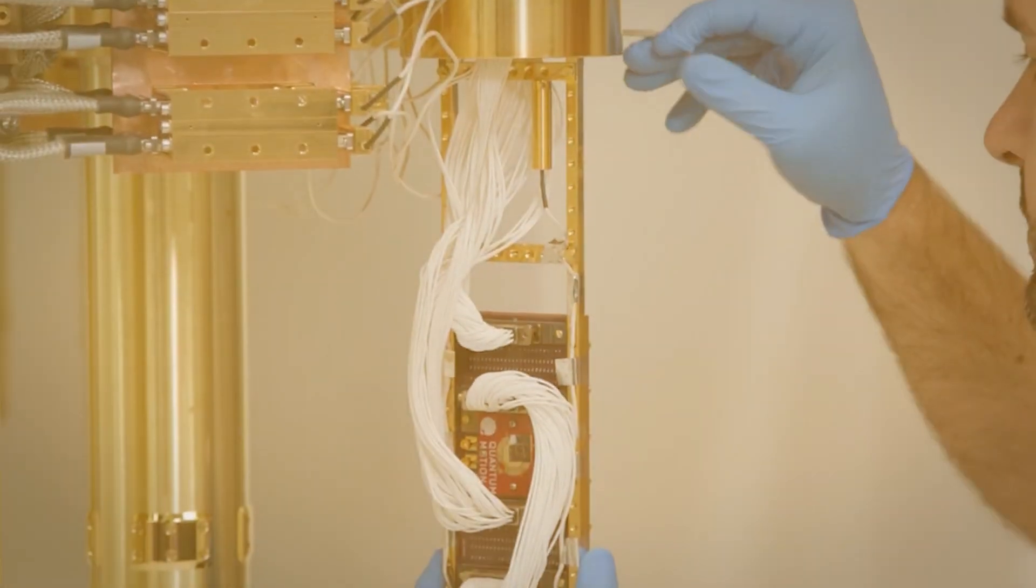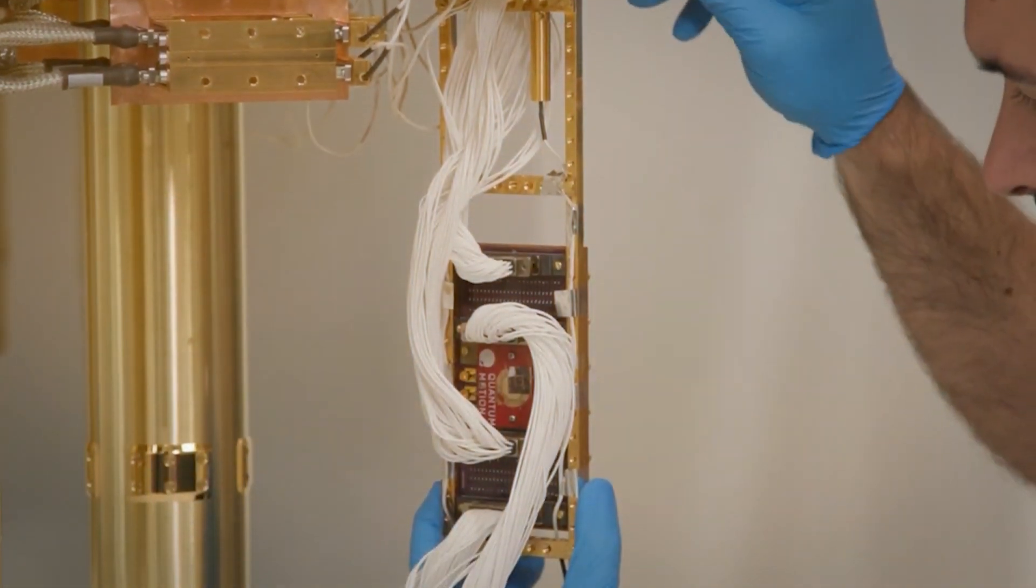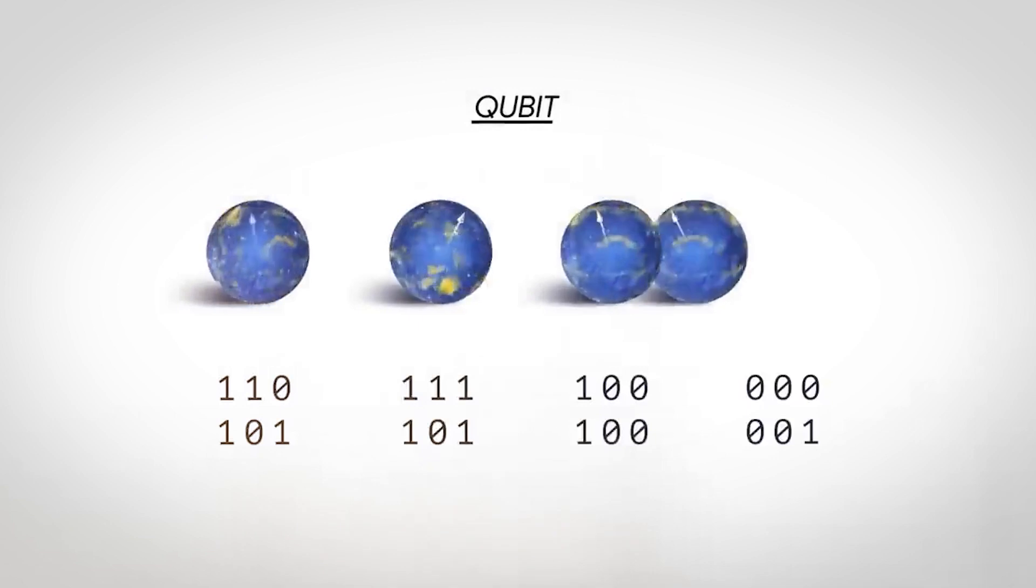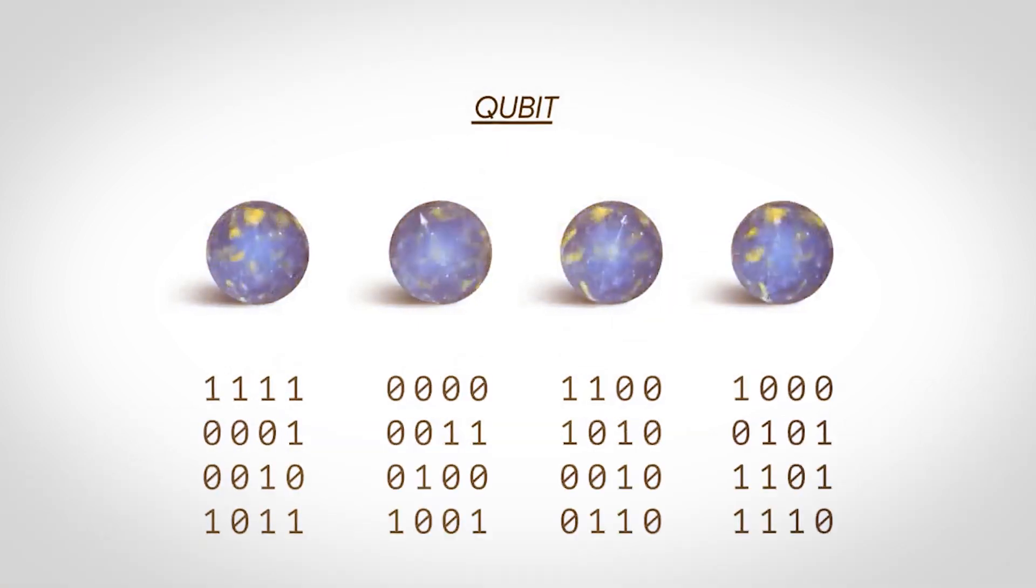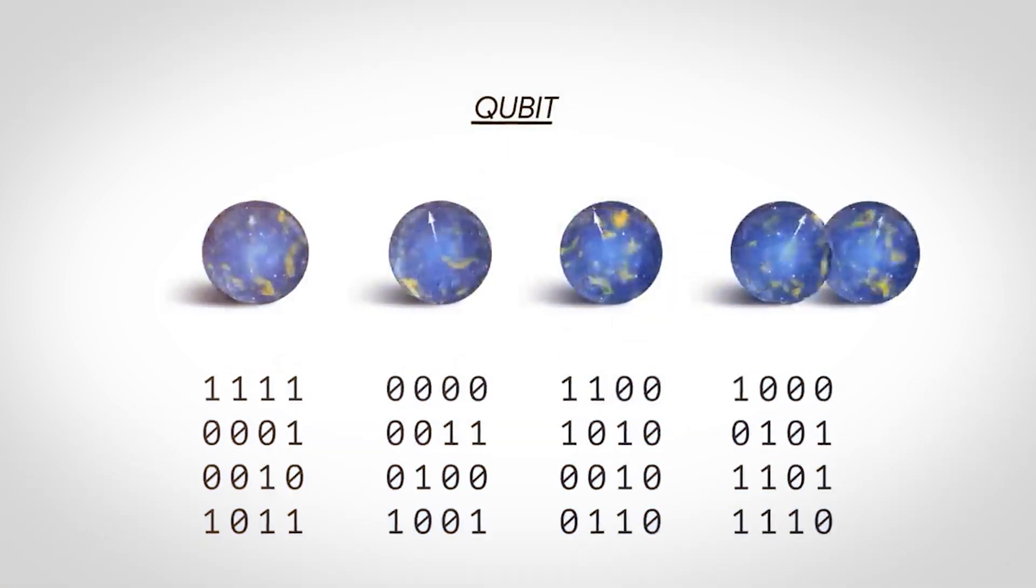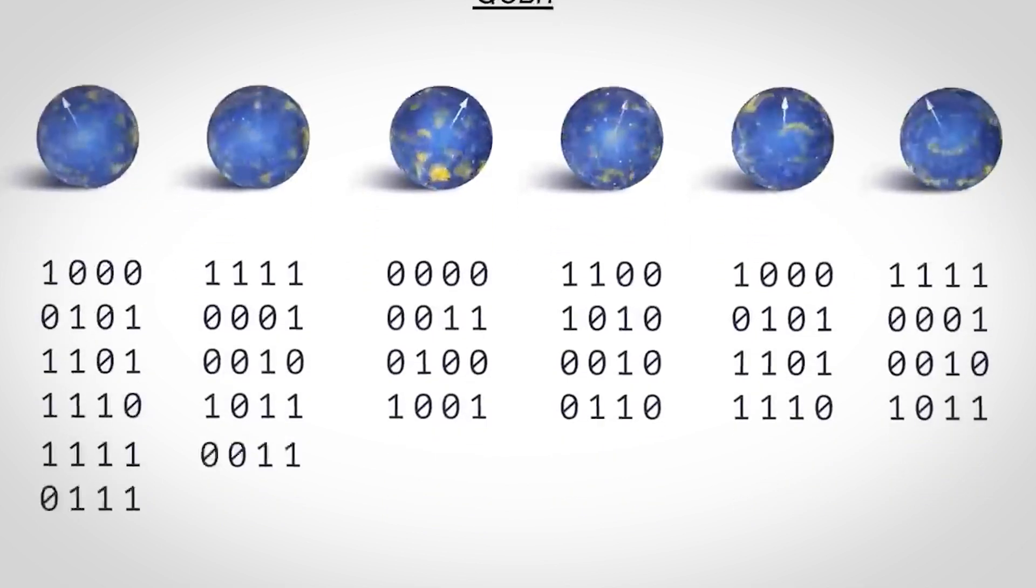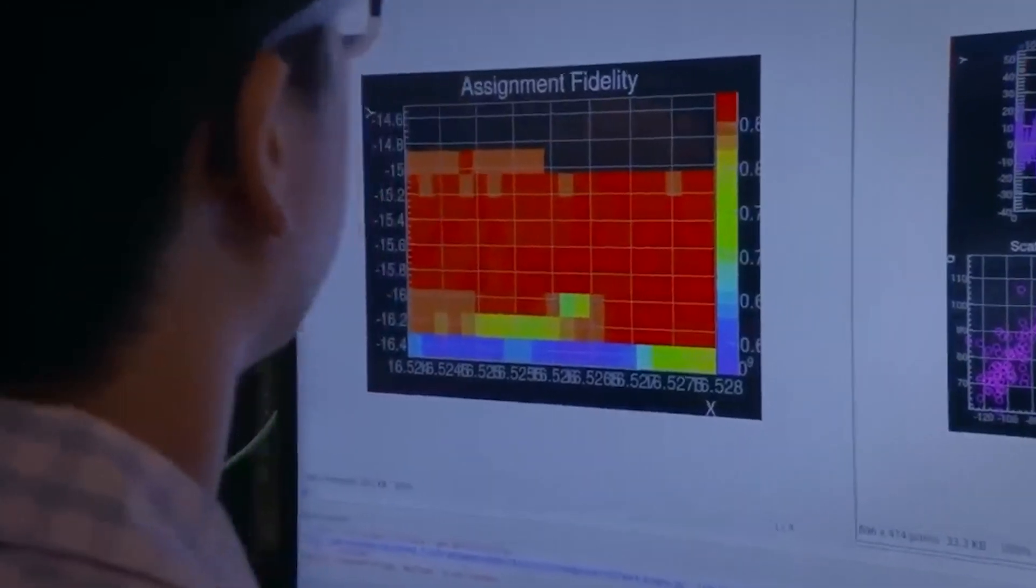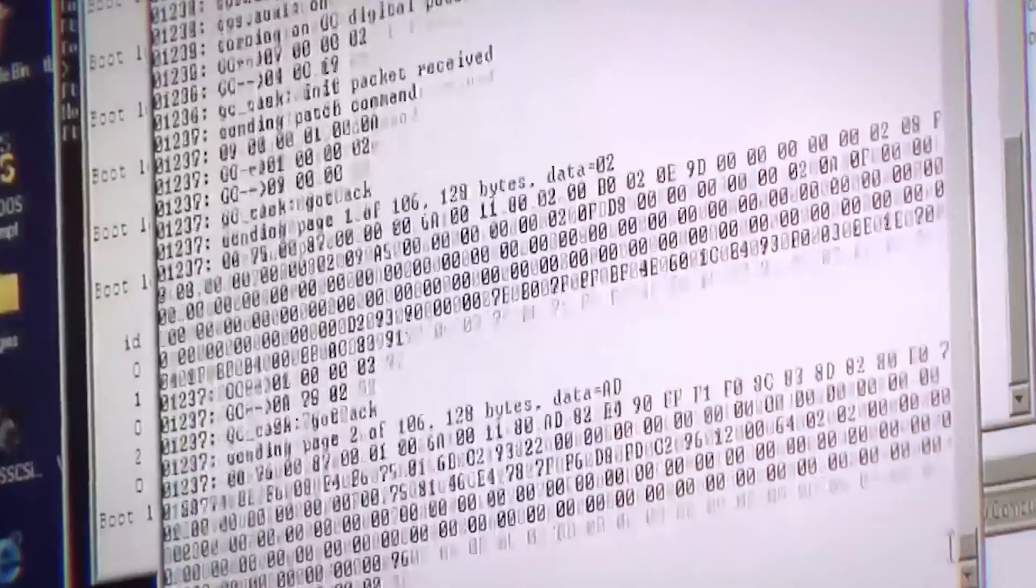The next most significant and intriguing principle is entanglement. It refers to a state where two or more qubits, the basic units of quantum information, become intertwined in a manner that cannot be accounted for by classical physics. The phenomenon of entanglement enables quantum computers to perform computations with an unparalleled speed that classical computers cannot match.